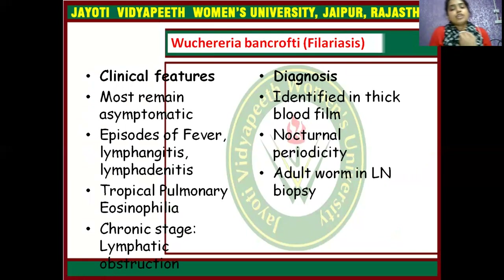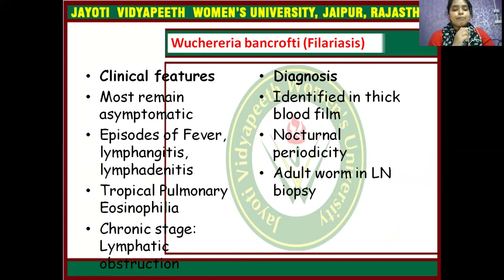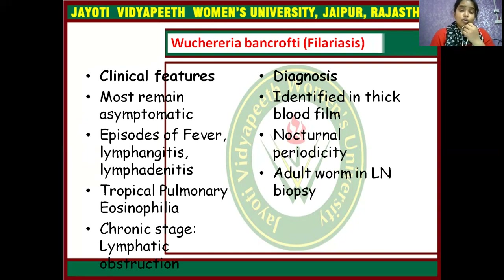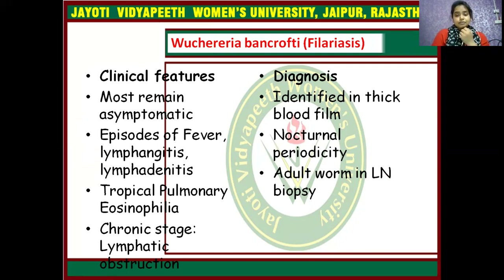Next is Wuchereria bancrofti, which causes filariasis. Clinical features include most cases remaining asymptomatic, episodic fevers, lymphadenitis, tropical pulmonary eosinophilia, and chronic stage lymphatic obstruction. Diagnosis may be made by identifying microfilariae in a thick blood film — with nocturnal periodicity — and adult forms in lymph node biopsy.